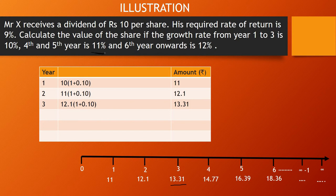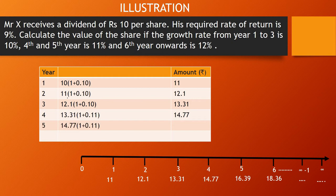After the third year, in the fourth and fifth year the growth rate changes to 11 percent. So in year four, D4 = D3 × (1 + 0.11) = 13.31 × 1.11 = 14.77. In year five, the growth rate is still 11 percent, so D5 = 14.77 × 1.11 = 16.39. In year six the growth rate changes again to 12 percent, so D6 = 16.39 × 1.12 = 18.36.